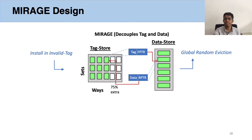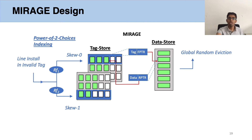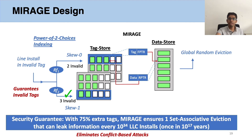This holds true only as long as an invalid tag is available in an index set. To ensure the availability of invalid tags, Mirage uses power-of-two-choices indexing. Here, the tag store is split into two partitions or skews, and a new address is mapped to a random set in each skew using cryptographic set indexing functions. As a new address is always installed in the set with the lower load between the two indexed sets, this ensures a balanced distribution of valid tags and guarantees availability of an invalid tag in at least one of the indexed sets. With this, a new line is always installed in an invalid tag and evicts a random cache line without requiring a set-associative eviction. This security guarantee is provided for the lifetime of the universe, eliminating conflict-based attacks in Mirage.